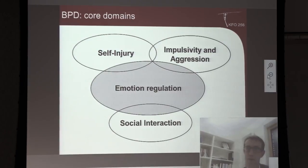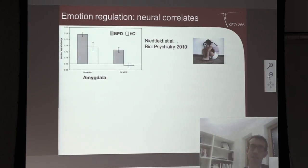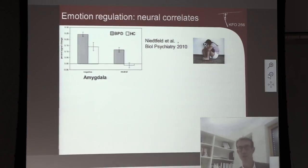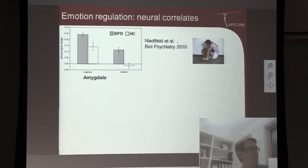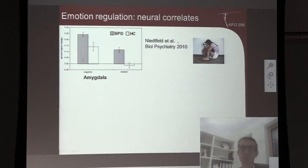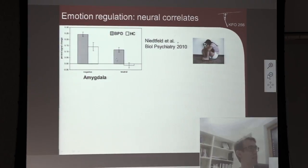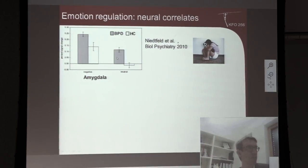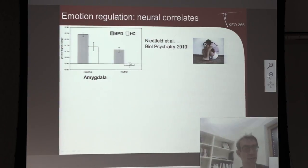From a brain perspective, the amygdala is in the center of attention. There are a lot of findings showing that the amygdala is overactive — the gray bars in BPD compared to healthy controls in white bars — not only with negative pictures but also with neutral pictures. We have done a meta-analysis; this is a robust finding.